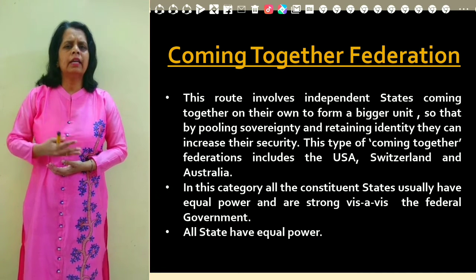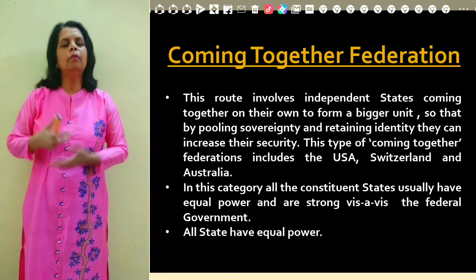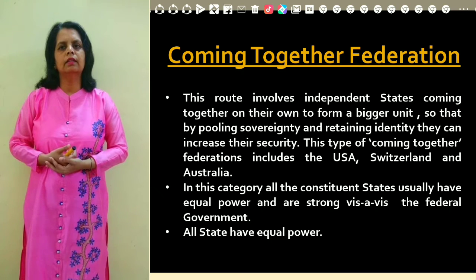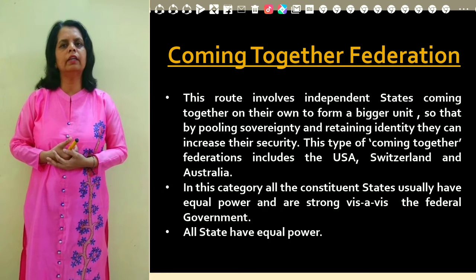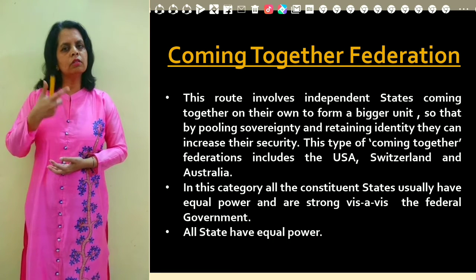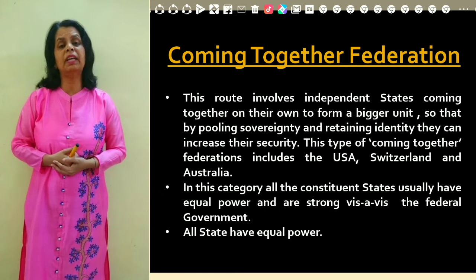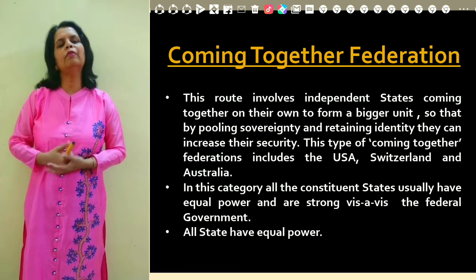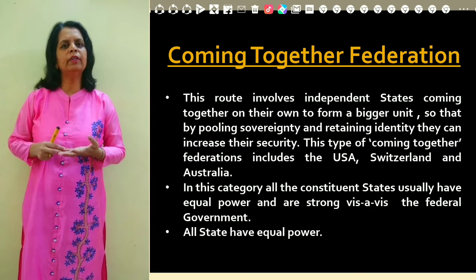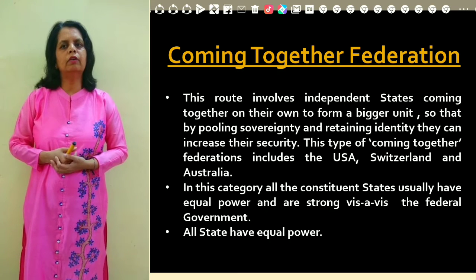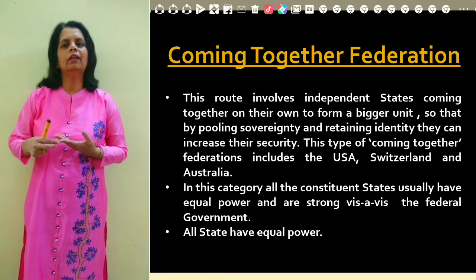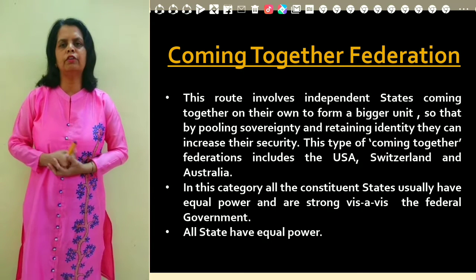In the 'coming together' federation, states on their own come together to form a bigger unit, so as to maintain their sovereignty and identity. By pooling their sovereignty they come together so that their identity is maintained and security is increased. In this type, all the states have equal power and the central government is also equally powerful. Examples include the USA, Switzerland, and Australia.